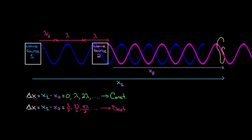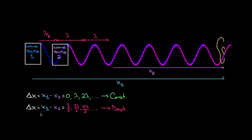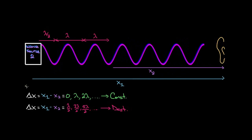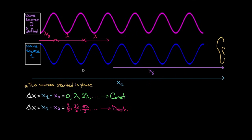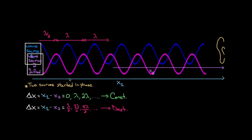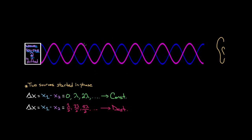So this is how path length differences between two wave sources determine whether you get constructive or destructive interference. But notice — this whole analysis assumes the two sources started in phase; neither of them is pi-shifted. Now let's see what happens if we start with one that was pi-shifted. We put the pi-shifted wave source two back in. Remember — this one was pi-shifted relative to wave source one. Now when these two wave sources are right next to each other, you're getting destructive interference.